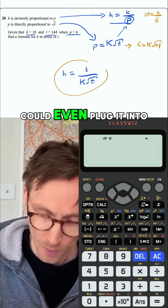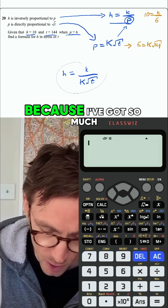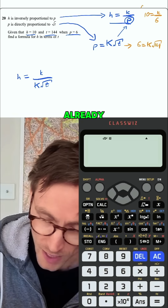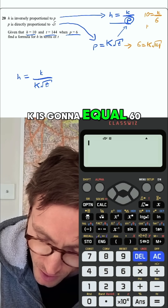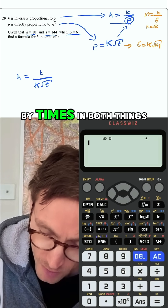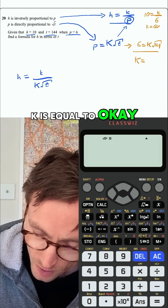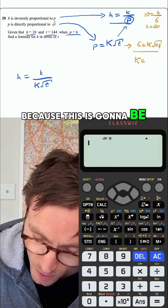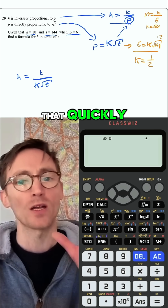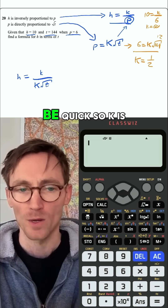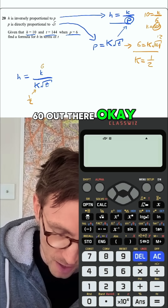You could even plug it into the combined equation as well. Because I've got so much information already, I can find the value of k. Here, k is going to equal 60 by multiplying both sides by 6. And here I can find what capital K equals — this is going to be 12, and then I divide by 12, so 6 over 12 is a half. So k equals a half, and k up there is 60.